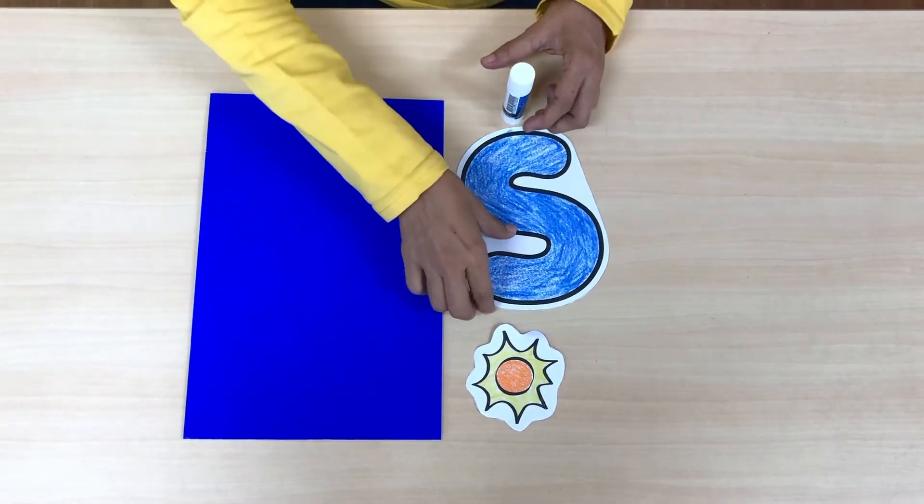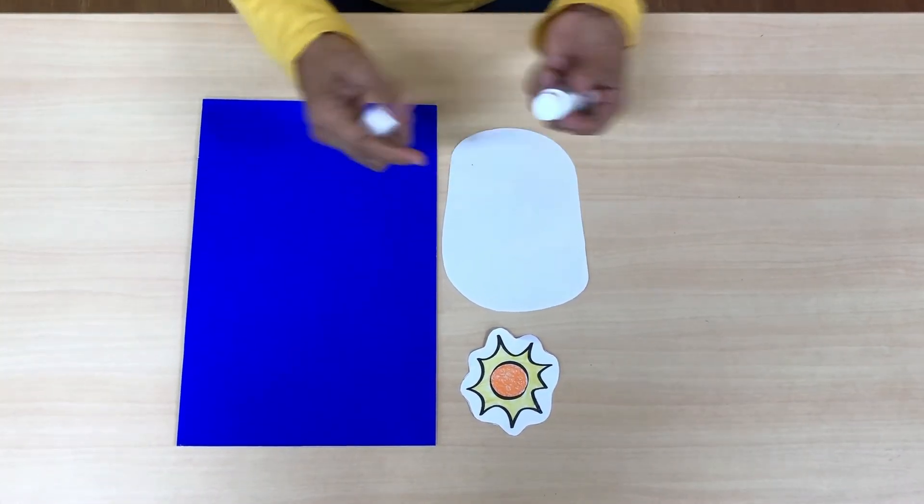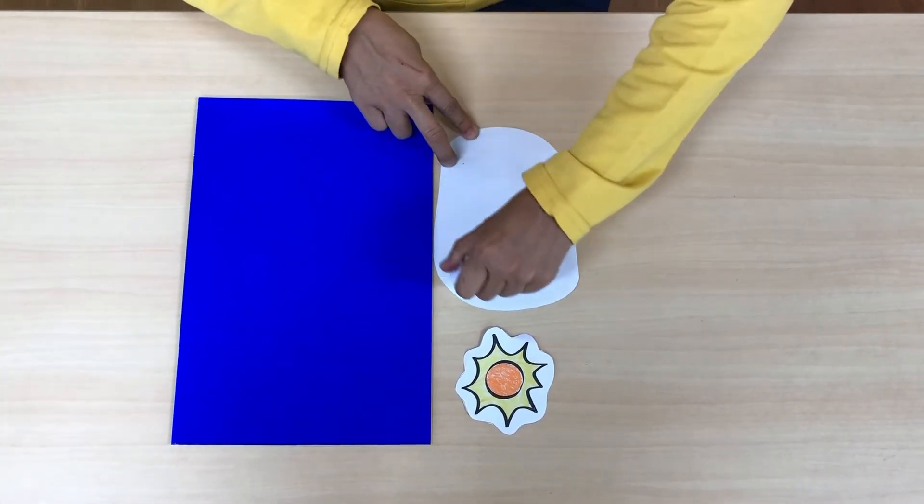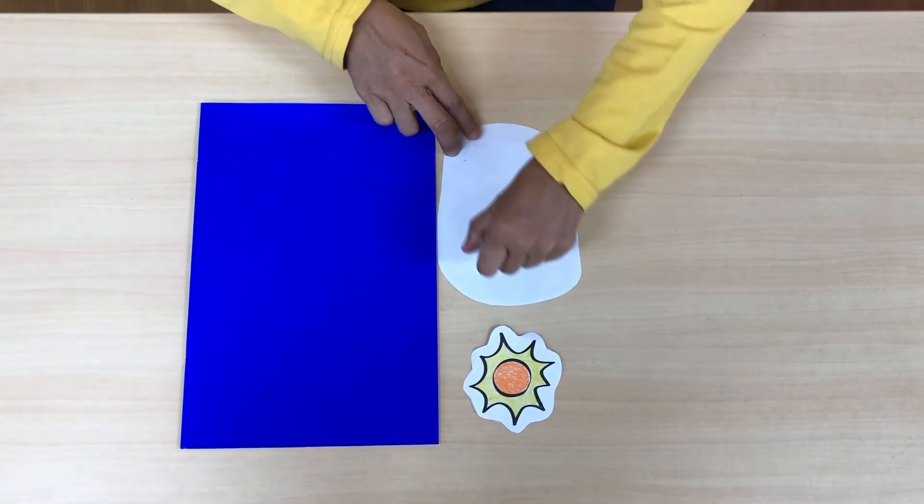Then you should go around gluing letter S like this.